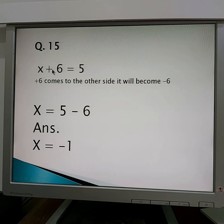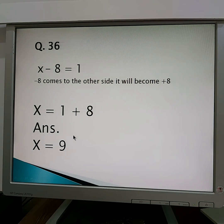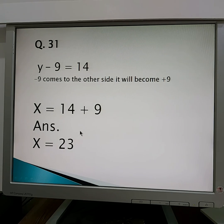Question number 15: when you bring this 6 to the other side it will become minus. The answer is minus 1. When you bring this 8 to the other side it will become positive. 1 plus 8 equals 9. Very simple. y minus 9. Here the variable is now y. When you bring this 9 to the other side it will become positive. 14 plus 9 equals 23. No need to use the calculator. Always use your mind to find out the values because in grade 6 calculator not allowed.